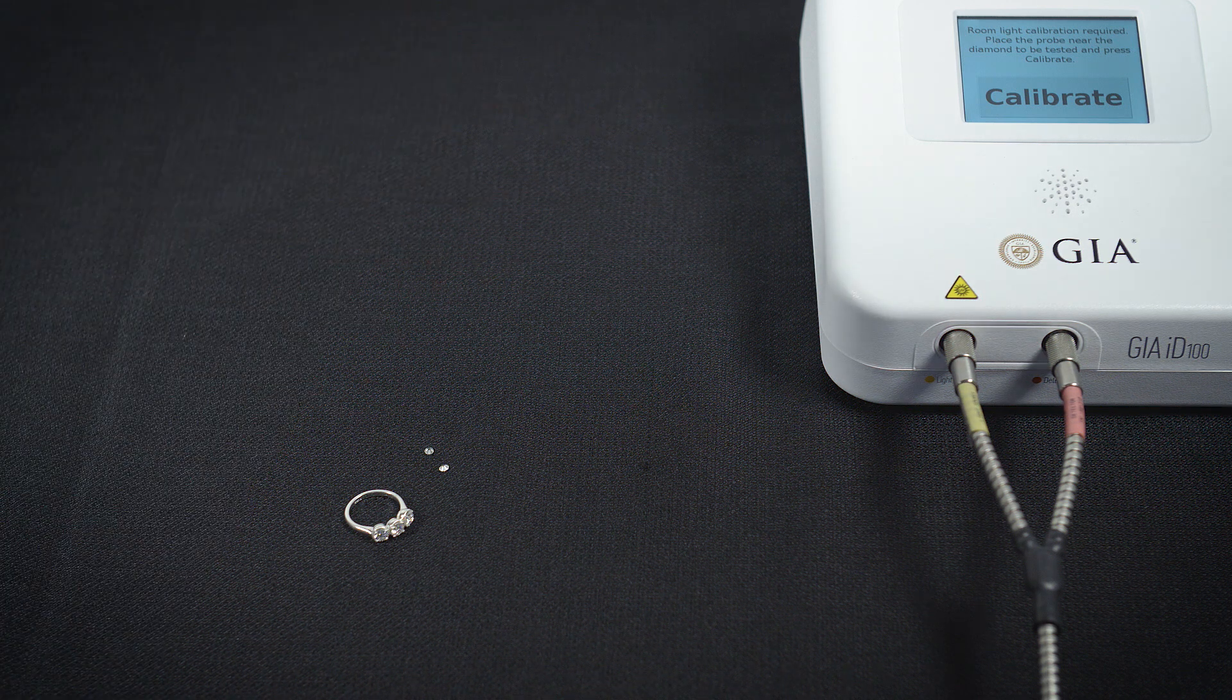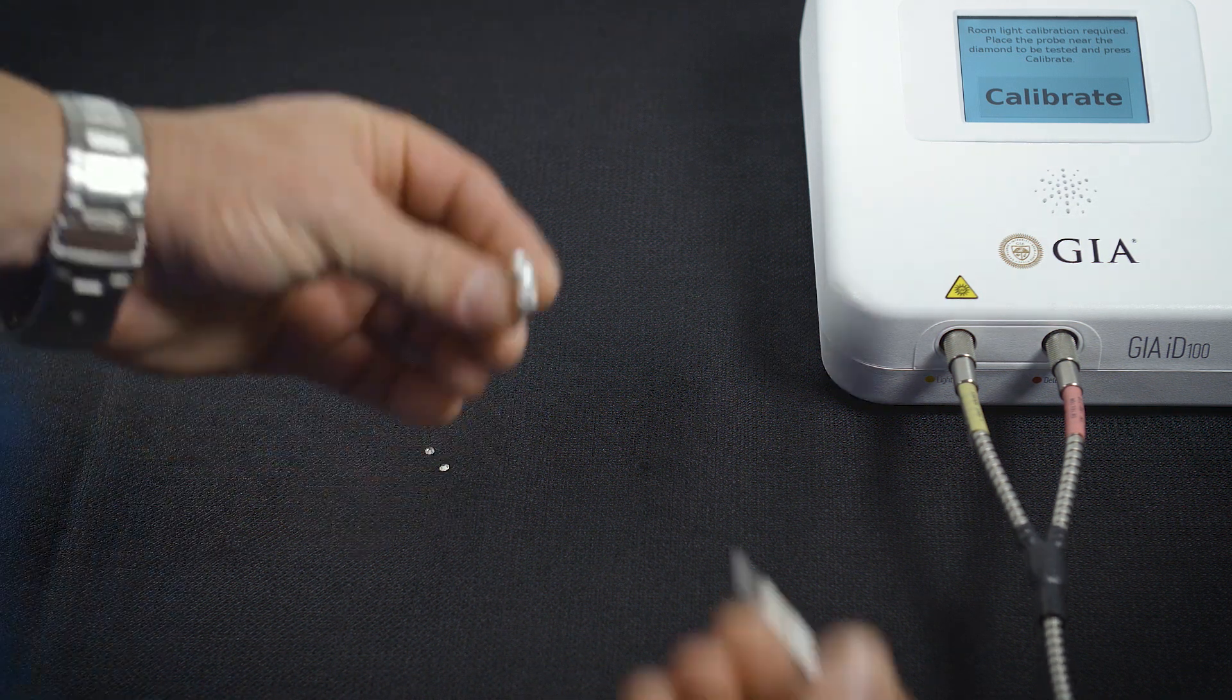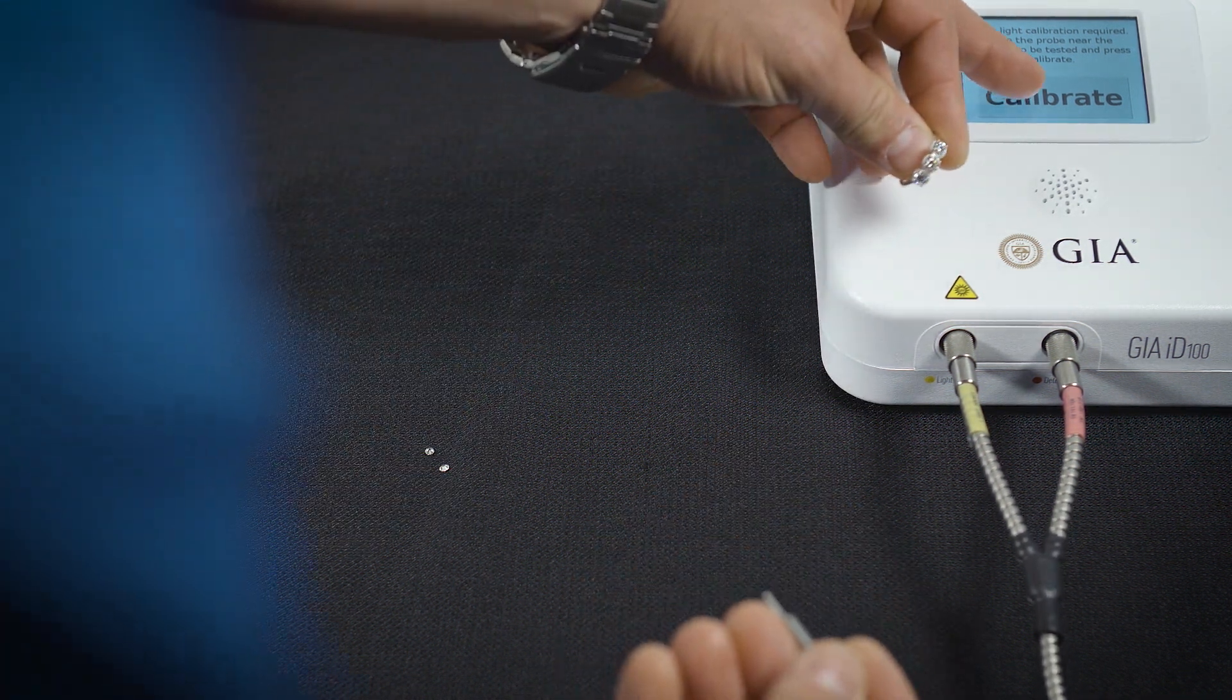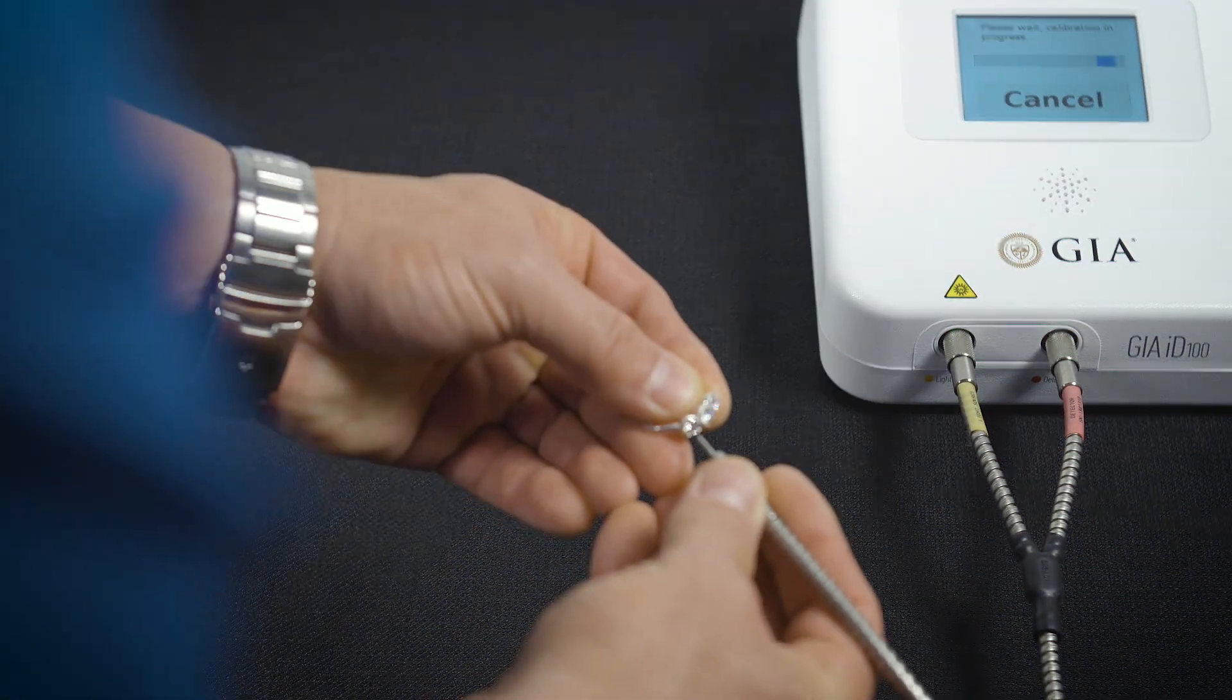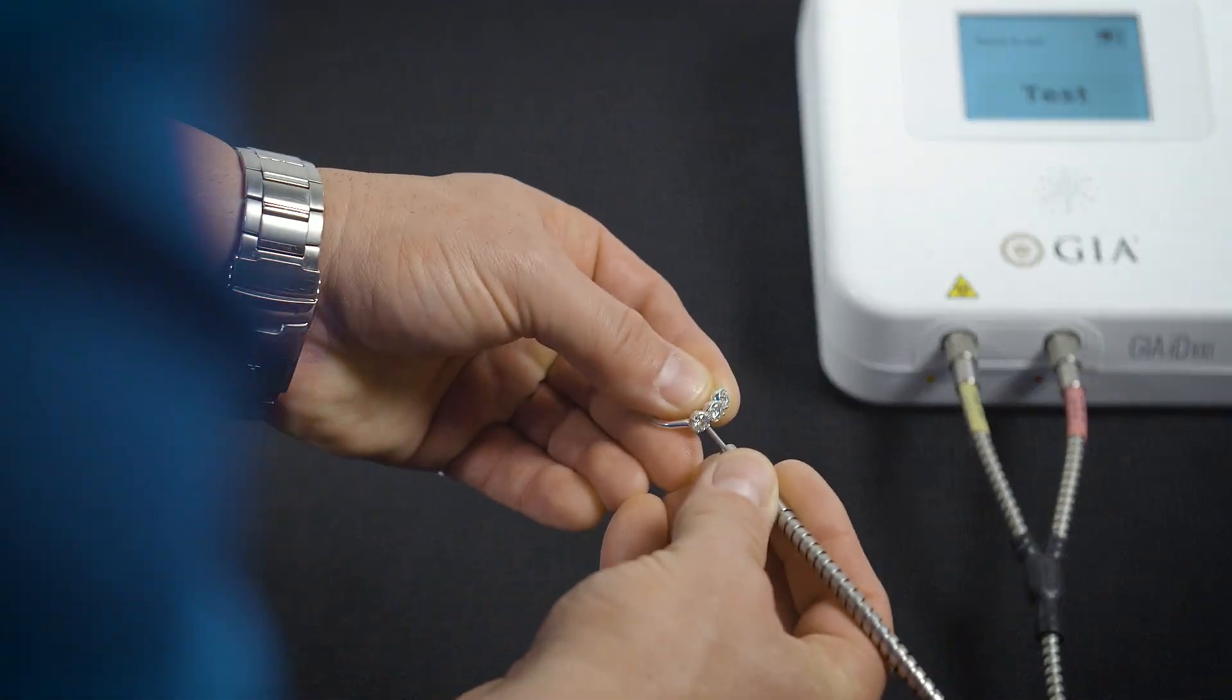Once the machine has prompted you to calibrate, you will take your probe, your ring, and you will touch calibrate and hold the probe close to the stone. Now it's ready to test.